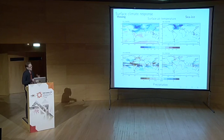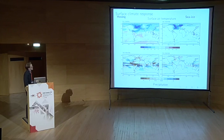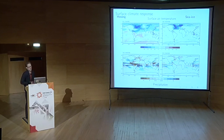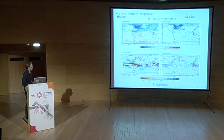The climate fields from the two scenarios, shown as cold minus warm phase anomalies, reveal that temperature change over Greenland is similar in both. However, the hosing scenario shows a bipolar seesaw with Southern Hemisphere warming and much larger tropical rainfall anomalies. The weaker rainfall response in the sea ice scenario is consistent with the absence of a significant tropical temperature gradient in that scenario.